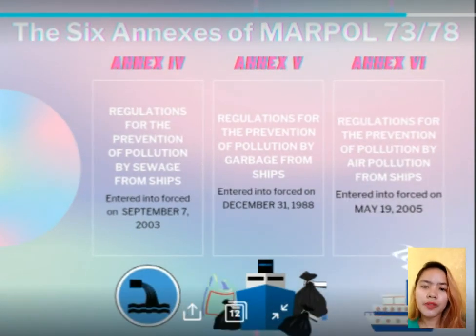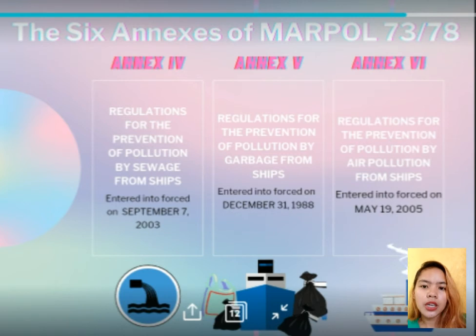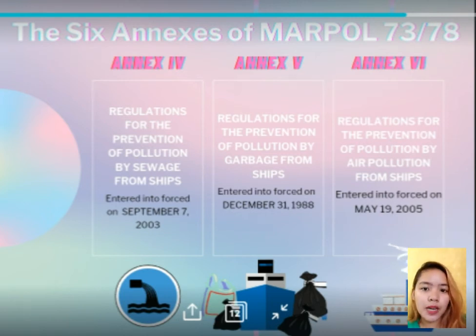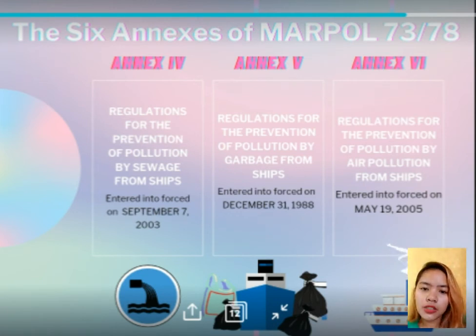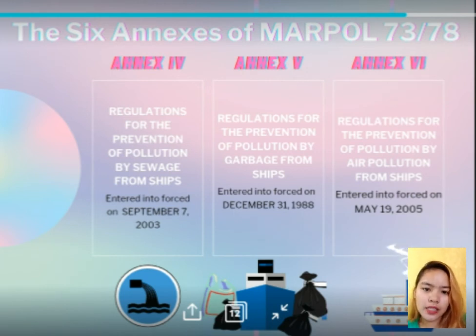Annex 4 covers the prevention of pollution by sewage from ships, entered into force on September 27, 2003. It contains requirements to control pollution of the sea by sewage. The discharge of sewage into the sea is prohibited except when the ship has in operation an approved sewage treatment plant, or when the ship is discharging disinfected sewage using an approved system at a distance of more than three nautical miles from the nearest land.